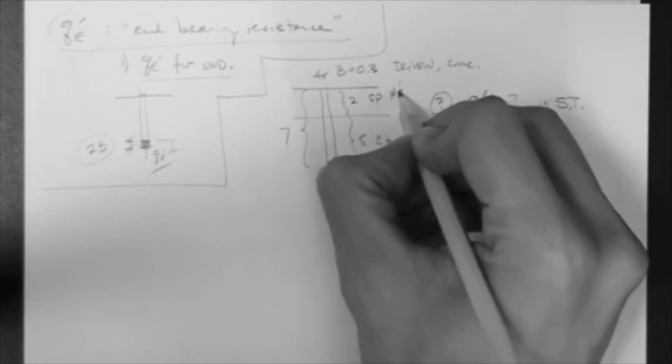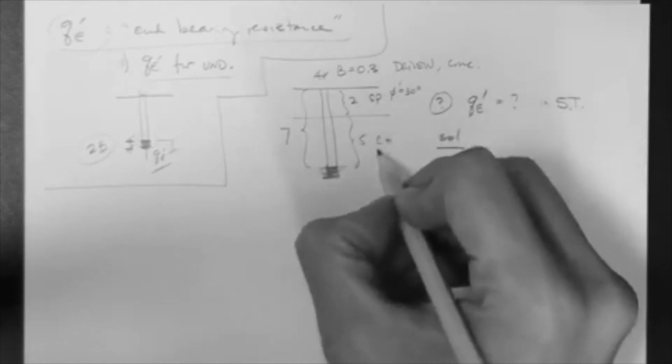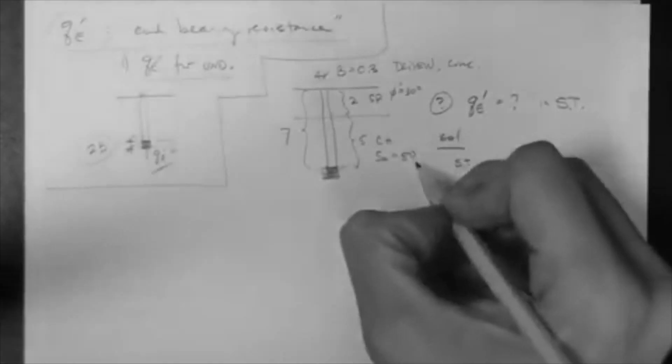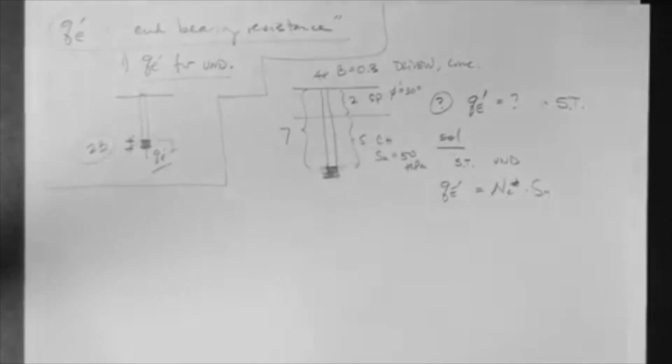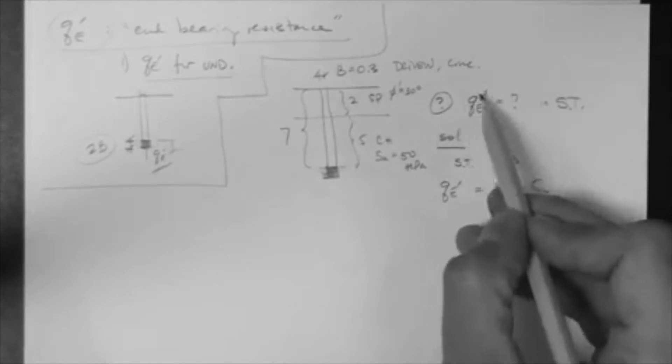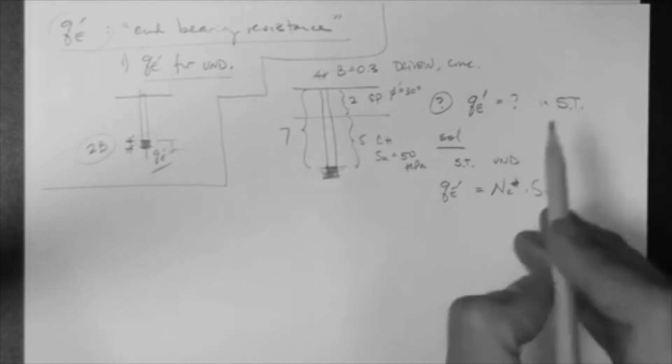Oops, I forgot to give you parameters here. This could be φ equal to 30, Su equal, let's say, let's say 50 kPa. So, you would be given this. So, the question is, what's Qe' short term?